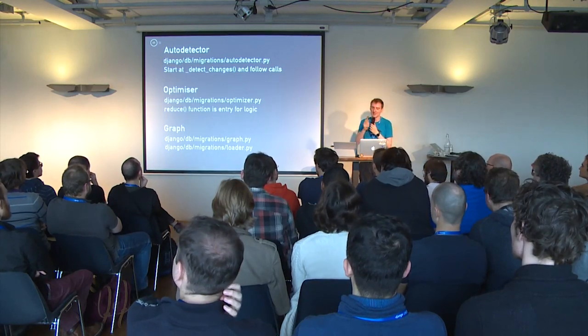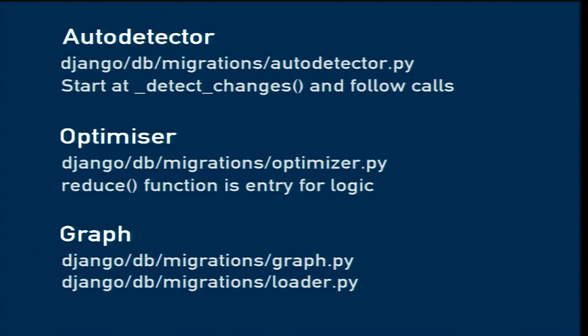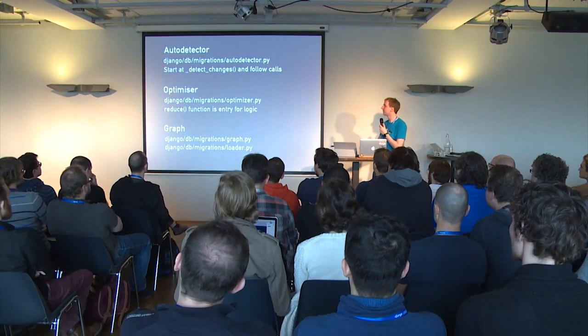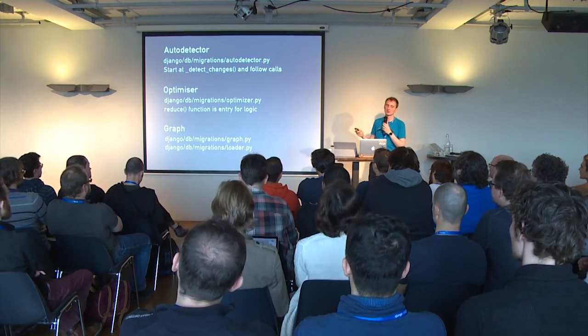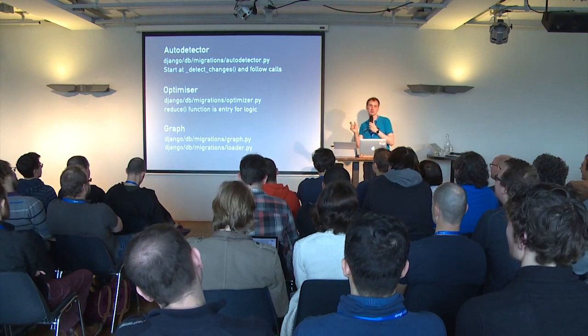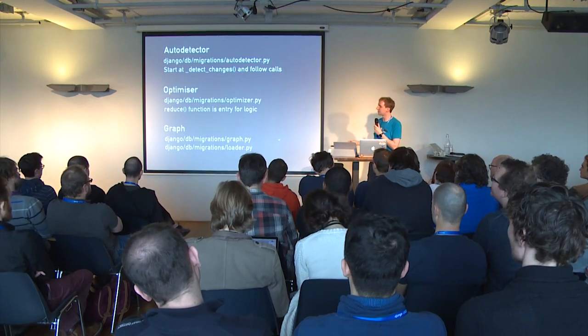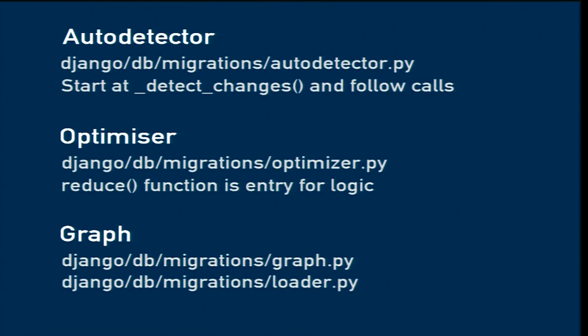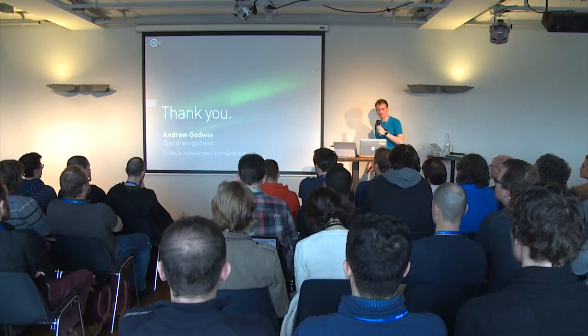If you're interested in reading the code: the autodetector is in migrations/autodetector.py — start at detect_changes and follow the call. The optimizer lives in optimizer.py — look at the reduce function, which is called again and again, checks the rules, checks the conflicts. There's a loop above that that cycles around — that's the key logic. The graph is much simpler in graph.py. The loader, in loader.py, is where you can see how Django loads things in memory, handles squashing, and replacing.